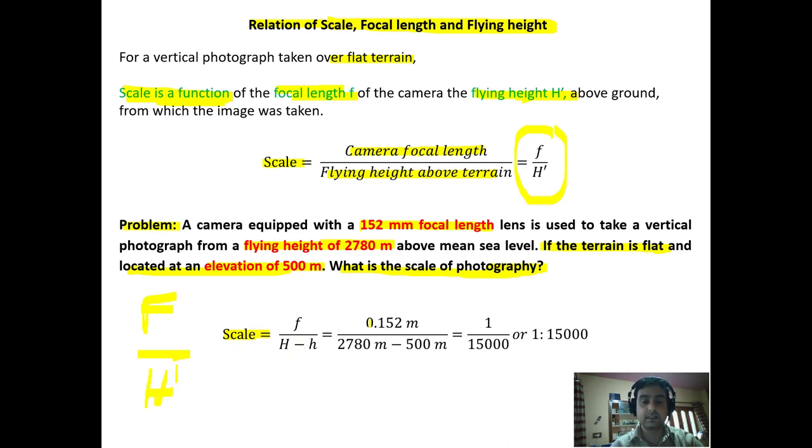So it means the focal length in meters 0.152 and 2780 is the flying height. We have to reduce it by 500 meters because it is located at elevation of 500 meters, which will be equal to 1 upon 15,000 or 1 is to 15,000. This will be the scale of the photography.